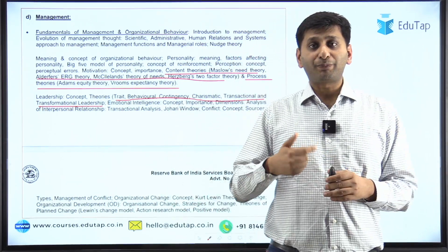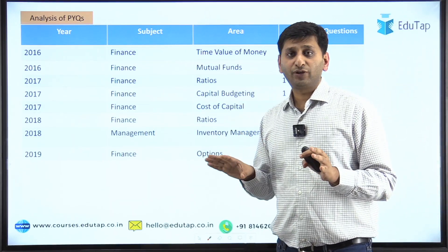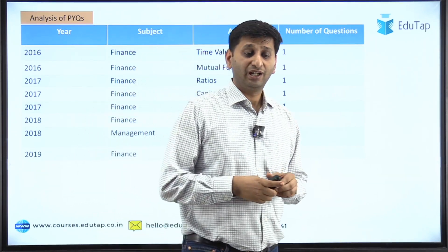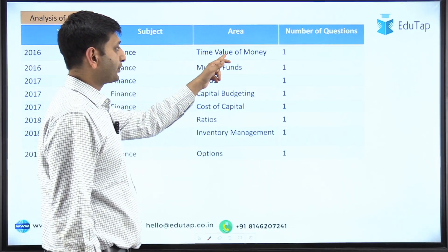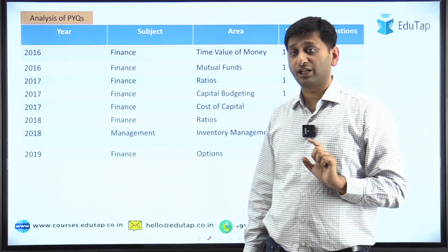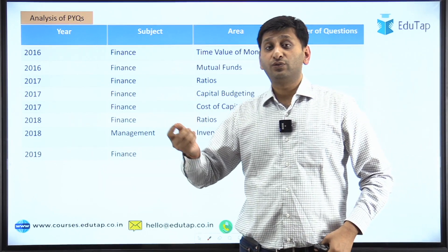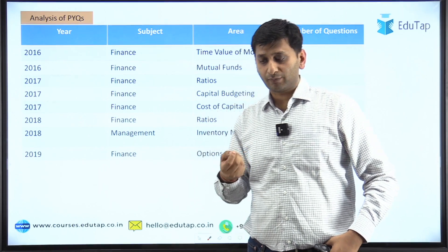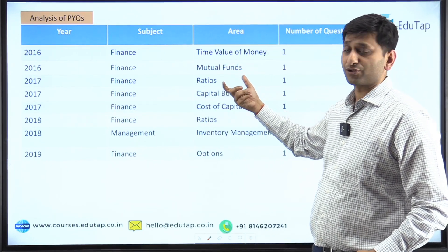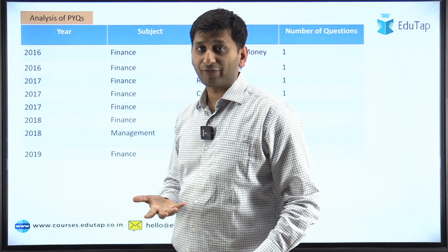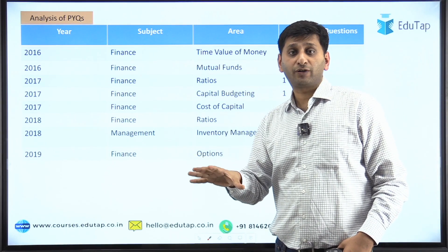Let us try to understand this by analyzing past year questions and then arrive at a final verdict. I analyzed previous year questions from finance, management, and ESI. For example, in 2016 there was a question on time value of money — which has never been in the RBI syllabus. Then in 2016 there was a question on mutual funds on NAV, which can be related to equity markets in the syllabus, but mutual funds is a separate topic. In 2017 there was a question on ratios — not directly part of the syllabus at all.